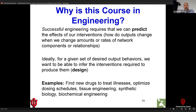As engineers, we have to be able to predict what our interventions are going to do. If we change some set of inputs, we need to know how the outputs of our network will change or the relationships in our network will change. We'd like to not only be able to predict it, but design interventions for some outcome we want.